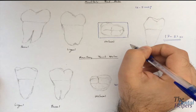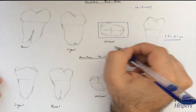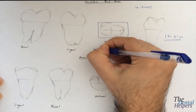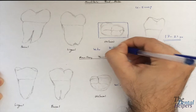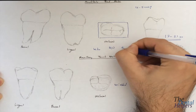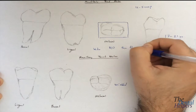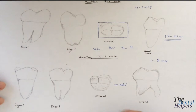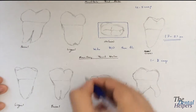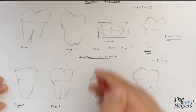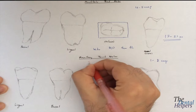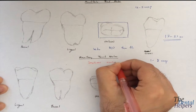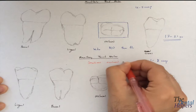In terms of the crown outline, it's going to be wider mesial-distally than buccal-lingually. And the maxillary third has the smallest occlusal outline.